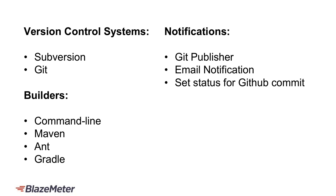Using the BlazeMeter Jenkins plugin, you can see here on the screen that Jenkins out of the box supports version control systems Subversion and Git, builders including command line, Maven, Ant, and Gradle, and notifications including Git Publisher, email notification, and set status for GitHub commit.